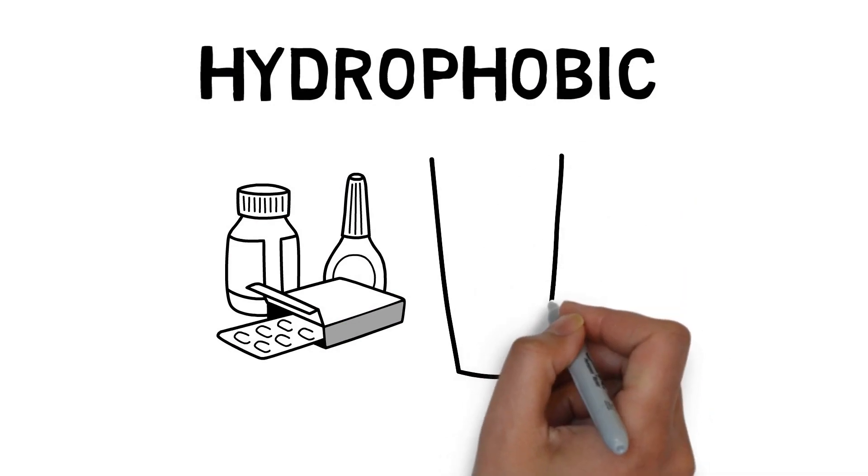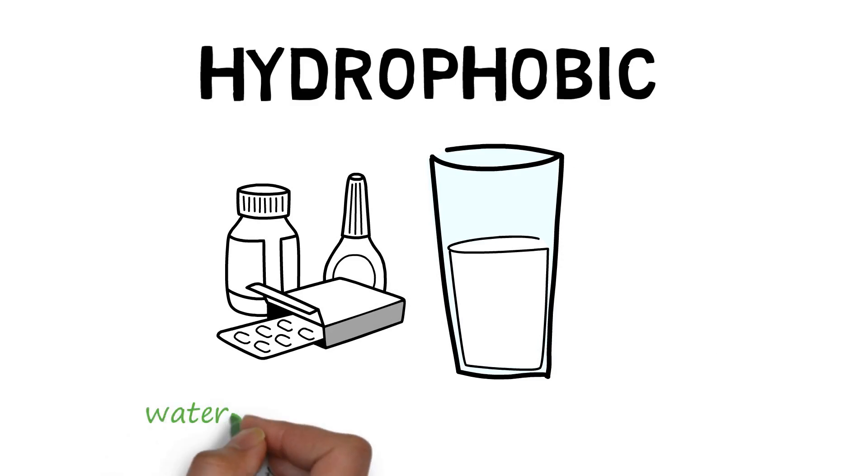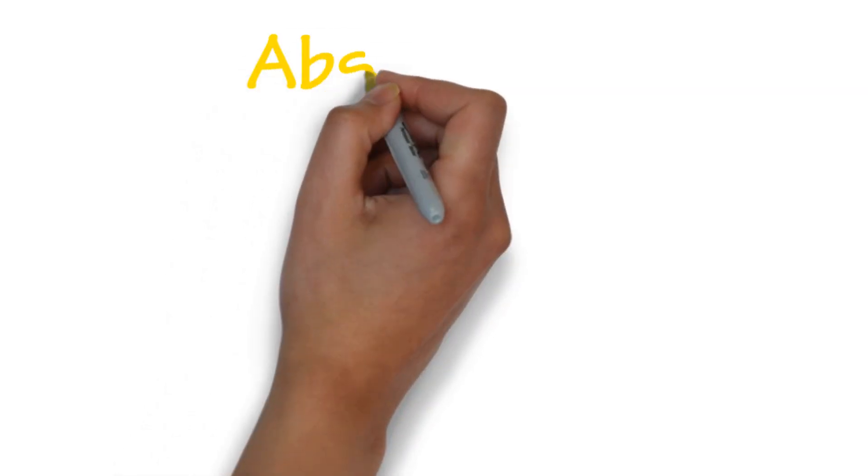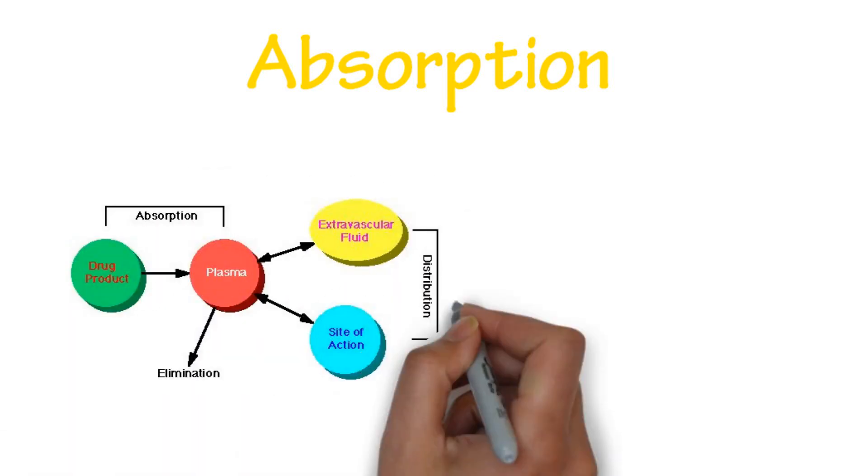Some drugs are hydrophilic, capable of associating with or absorbing water. These drugs move through water-filled passages called aqueous pores, which allow water and any drug contained in it to move through the membrane. Absorption is the transfer of drug into the blood from an administered drug product, from any route of administration.